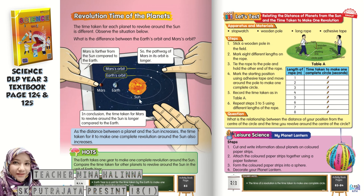The nearer the planet to the sun, the shorter the time it takes to revolve around the sun. As stated in your textbook: as the distance between a planet and the sun increases, the time taken to make one complete revolution also increases. That means the farther away a planet is from the sun, the longer the time taken to revolve around the sun.